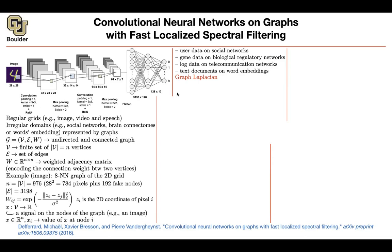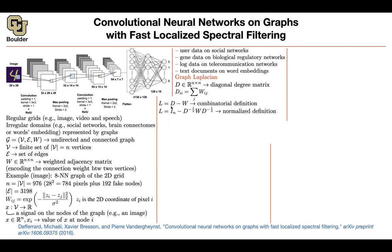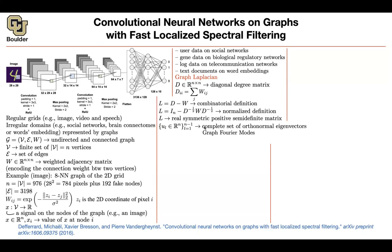We just saw that convolution has to do something with the Laplacian. We introduced the degree matrix — it's a diagonal matrix which is the summation of your weights, the rows of your adjacency matrix. The combinatorial definition of the graph Laplacian is D minus W. You can also have a normalized definition, where you multiply L from left and right by D^(-1/2), giving you identity minus D^(-1/2) W D^(-1/2). It turns out that L is a real-valued, symmetric, positive semi-definite matrix.